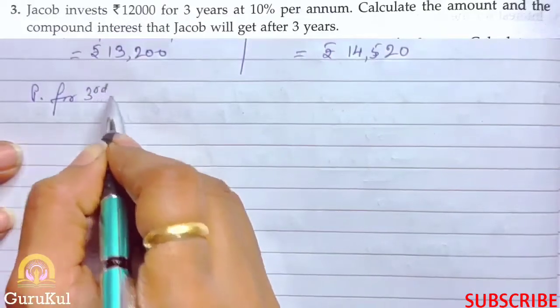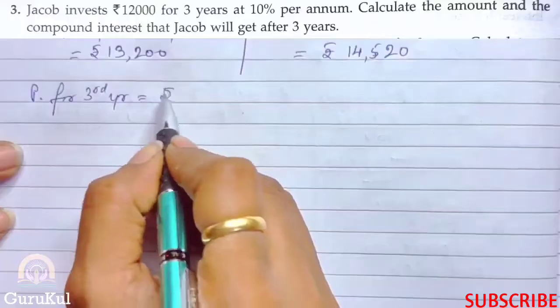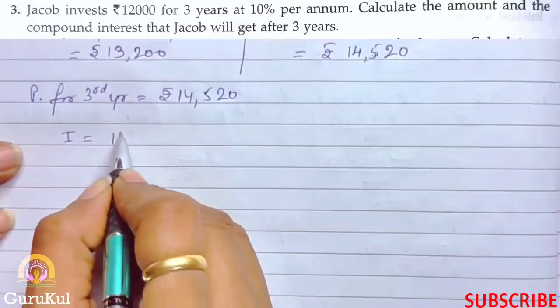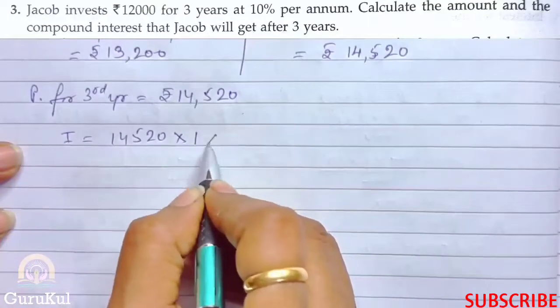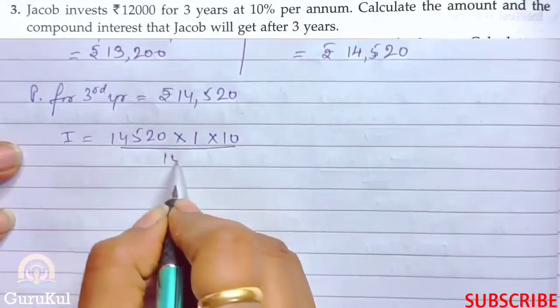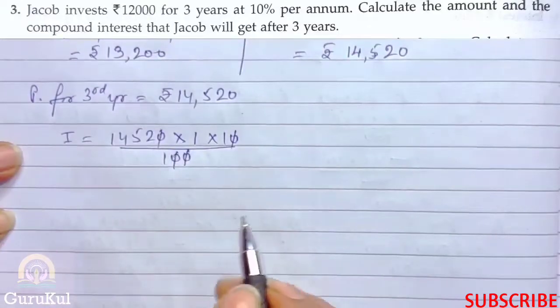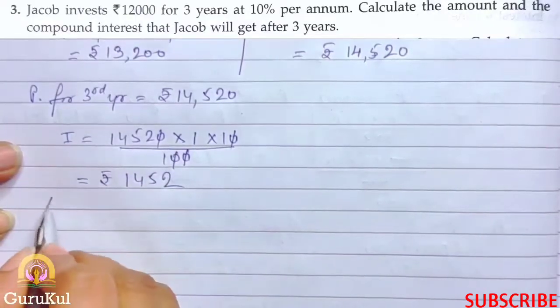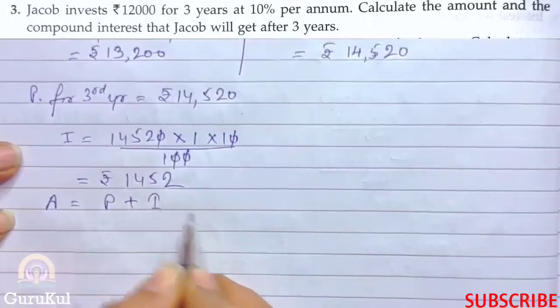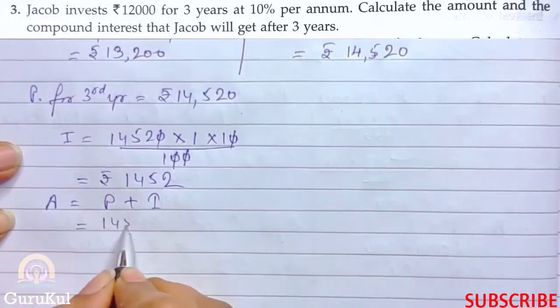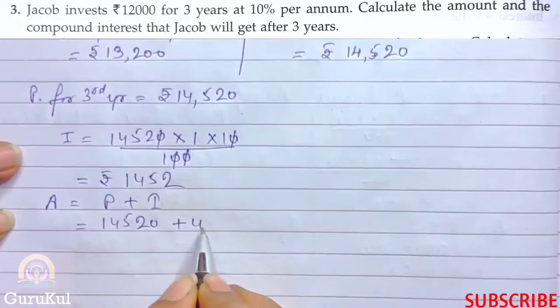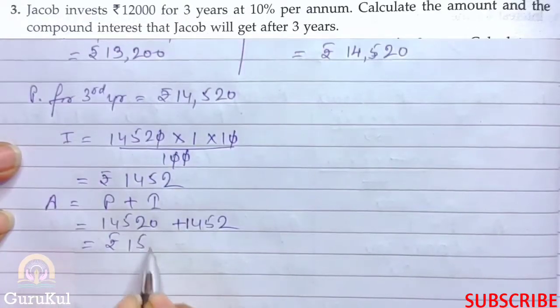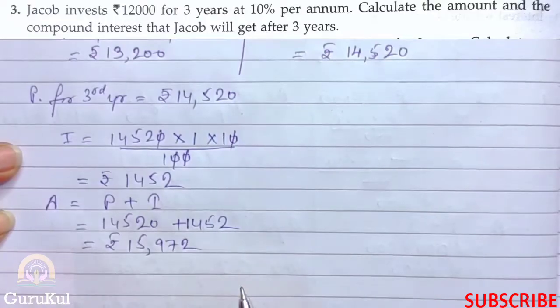So principle for third year is ₹14,520. Interest is 14,520 into time 1 into rate 10 by 100. Equal number of zeros got cancelled. So interest is ₹1452. Amount is principle plus interest, that is 14,520 plus 1452, that gives us the amount of ₹15,972.